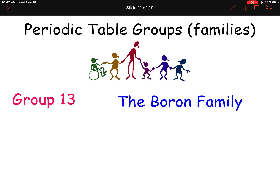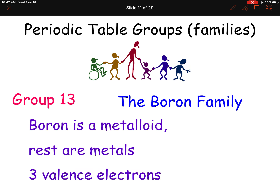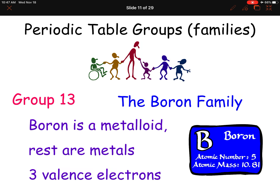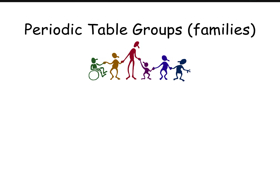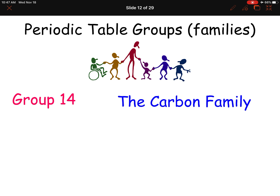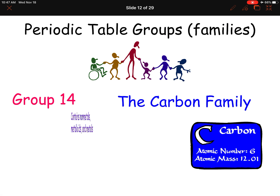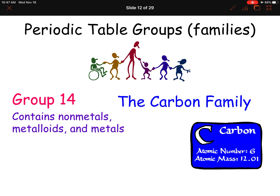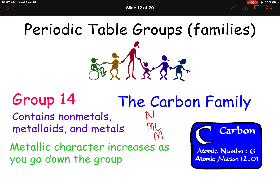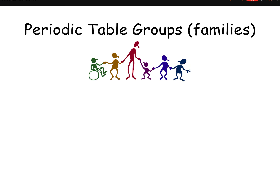Group 13 — you can call it the boron family, though it doesn't really have a unique name. Boron is a metalloid; the rest are metals. They have three valence electrons. We're not going to color in the boron family. Group 14 is the carbon family. These groups all have the same number of valence electrons as their group number. What's unique about group 14 is that it has metals, metalloids, and nonmetals — starting with a nonmetal, then a metalloid, then metals going down, so metallic character increases as you go down. They have four valence electrons. No need to color those.